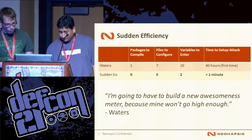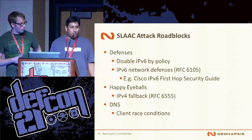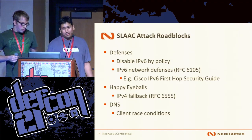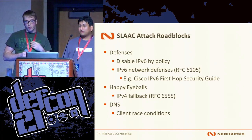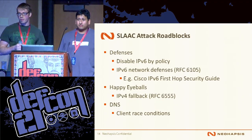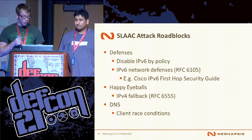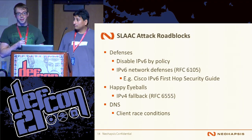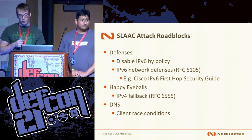Unfortunately not all is rosy in IPv6 land. We have a couple of issues with the attack as it is. The biggest one is disabling IPv6 by policy — if you're in an organization that has it turned off, this attack simply isn't going to work. In general, one of the nice things about this attack is that any time you set up a new Windows host, it has IPv6 turned on anyway. So unless it's explicitly turned off, there's a good chance you're going to have hosts with IPv6 enabled.